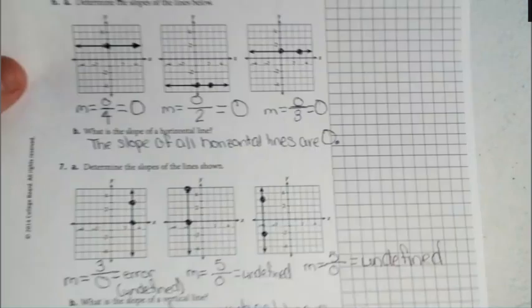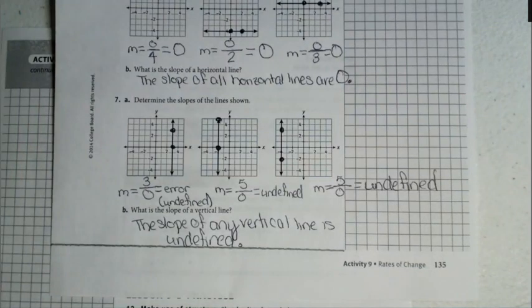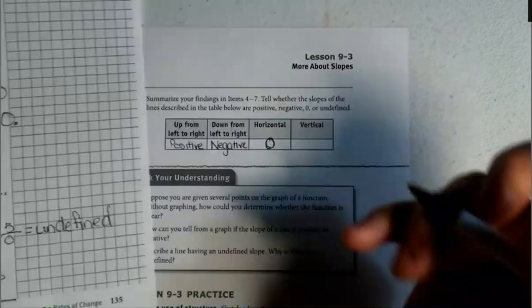In vertical lines, which go straight up and down, these are going to have a denominator of zero which makes those undefined.